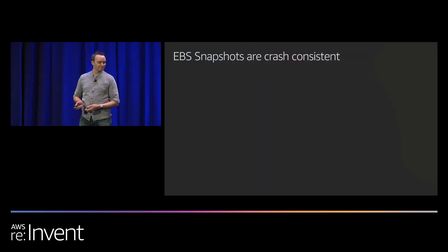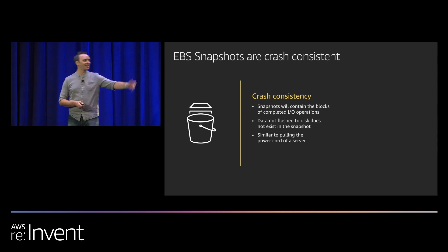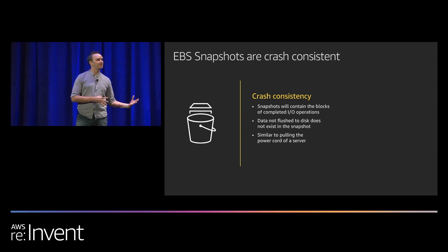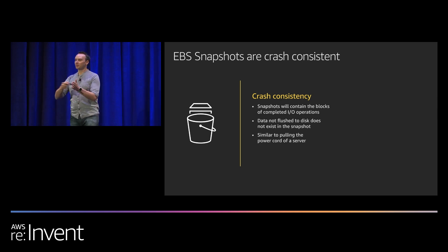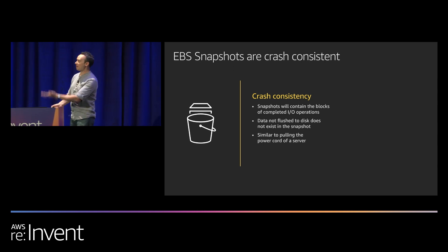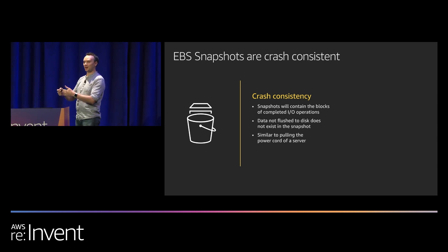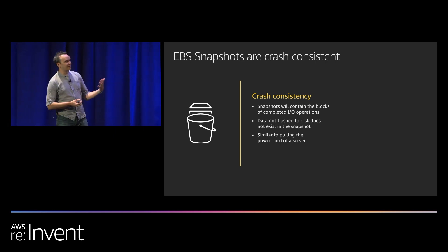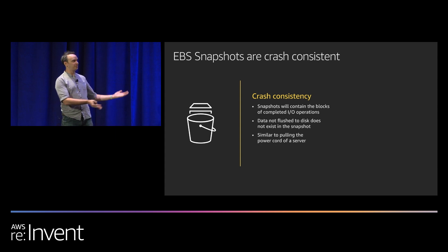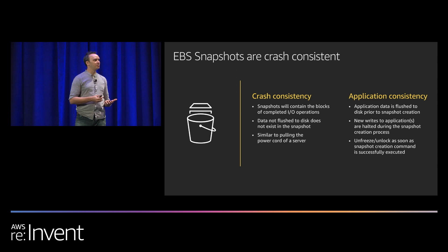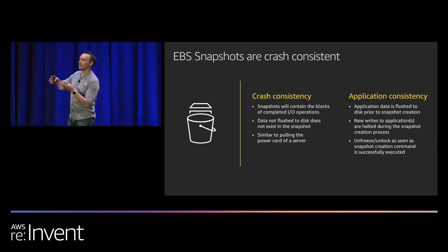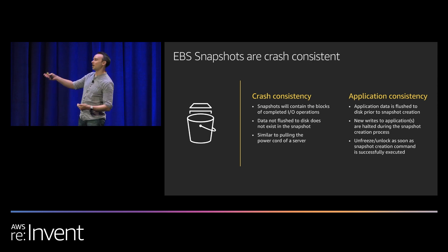On snapshot consistency: EBS snapshots are crash consistent. The easiest way to think about it is like pulling a USB drive out of your laptop — whatever existed on the drive at that moment is what's on it. If you have a PowerPoint open with unsaved edits, that data won't be on the drive. With application-consistent snapshots, you stop I/O, flush data to disk, take a snapshot, then unlock I/O and resume writing — ensuring your application has committed everything to disk before the snapshot.